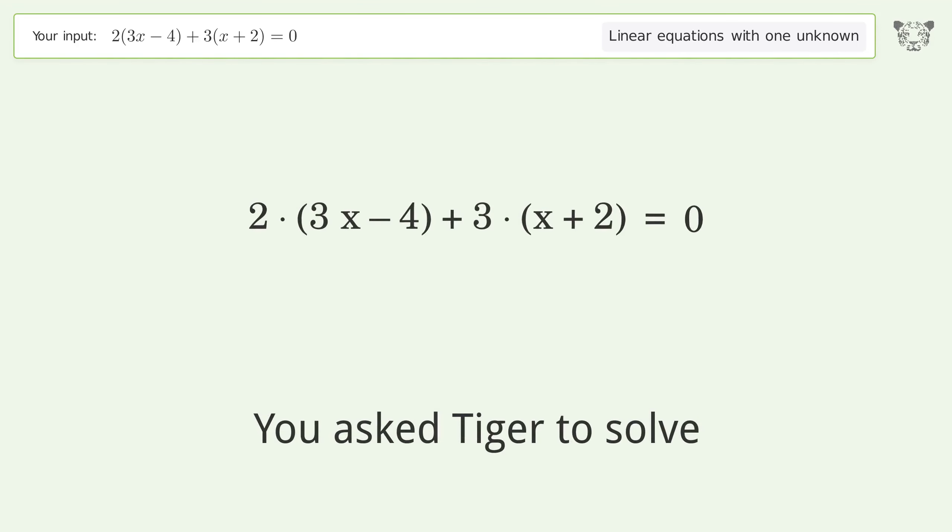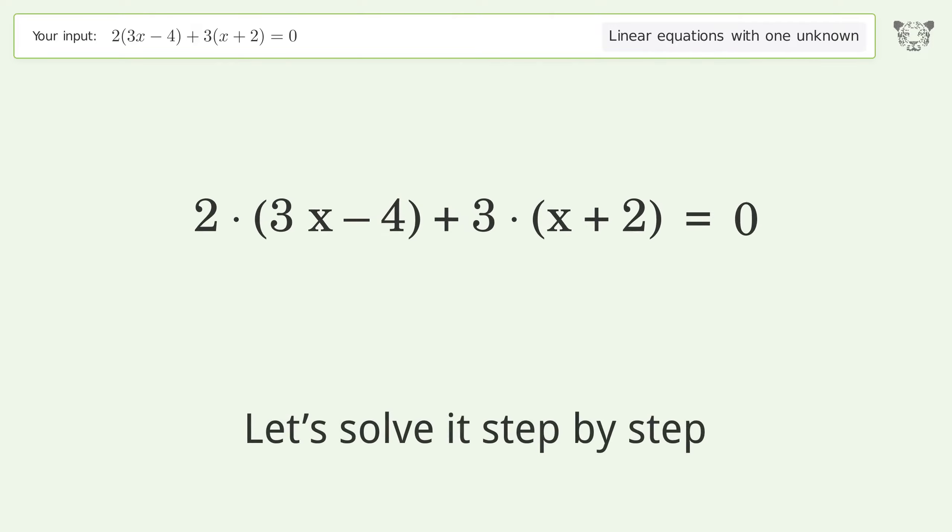You ask Tiger to solve this. It deals with linear equations with one unknown. The final result is x equals 2 over 9. Let's solve it step by step. Simplify the expression.